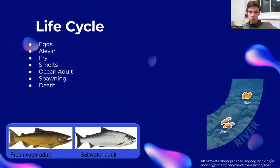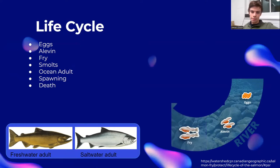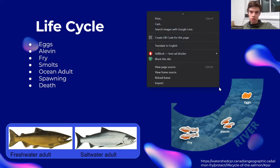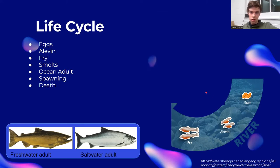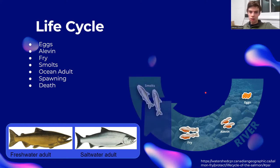When the yolk is consumed, the fish are called fry. At this stage, they get their nutrients from aquatic plants and plankton. At this point, the fry start migrating downstream towards estuaries. Once there, they reach the smolt stage, where they turn a silver color, begin to adjust to higher salinity, and feed in the ocean.